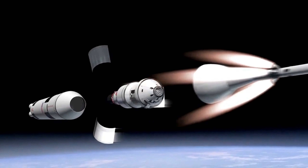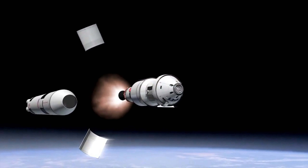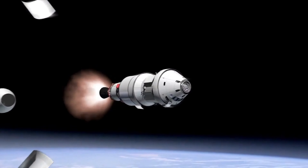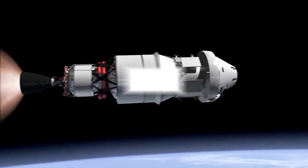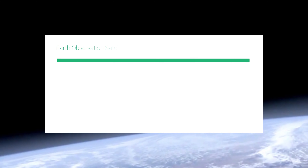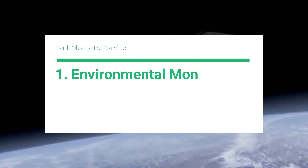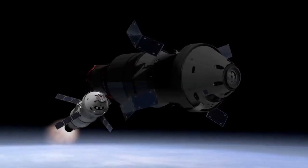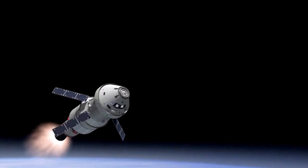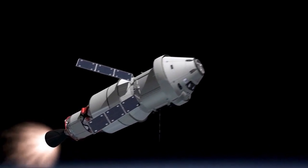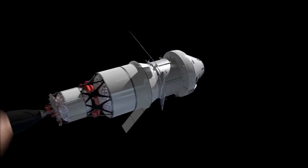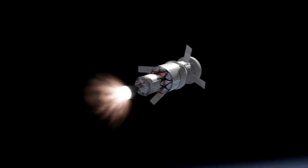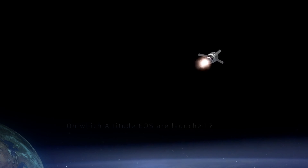Earth Observation Satellites are used or designed for observation from orbit. These satellites are used for environmental monitoring, meteorology, cartography, and many more things. Some of these satellites can take satellite images analogous to aerial photographs.